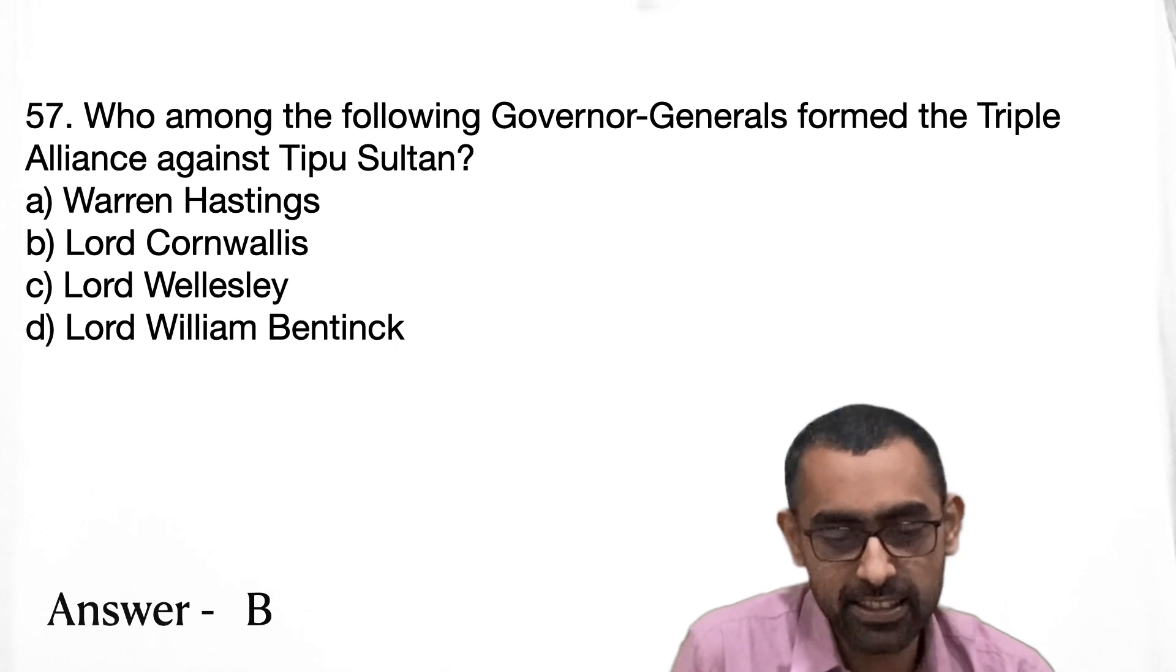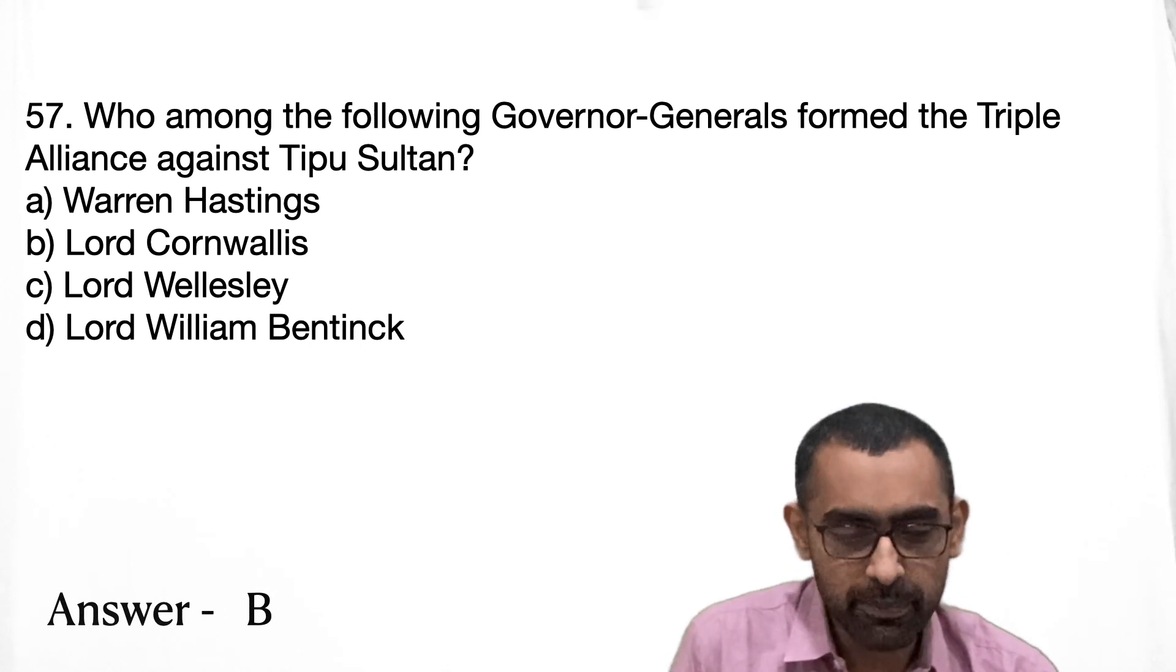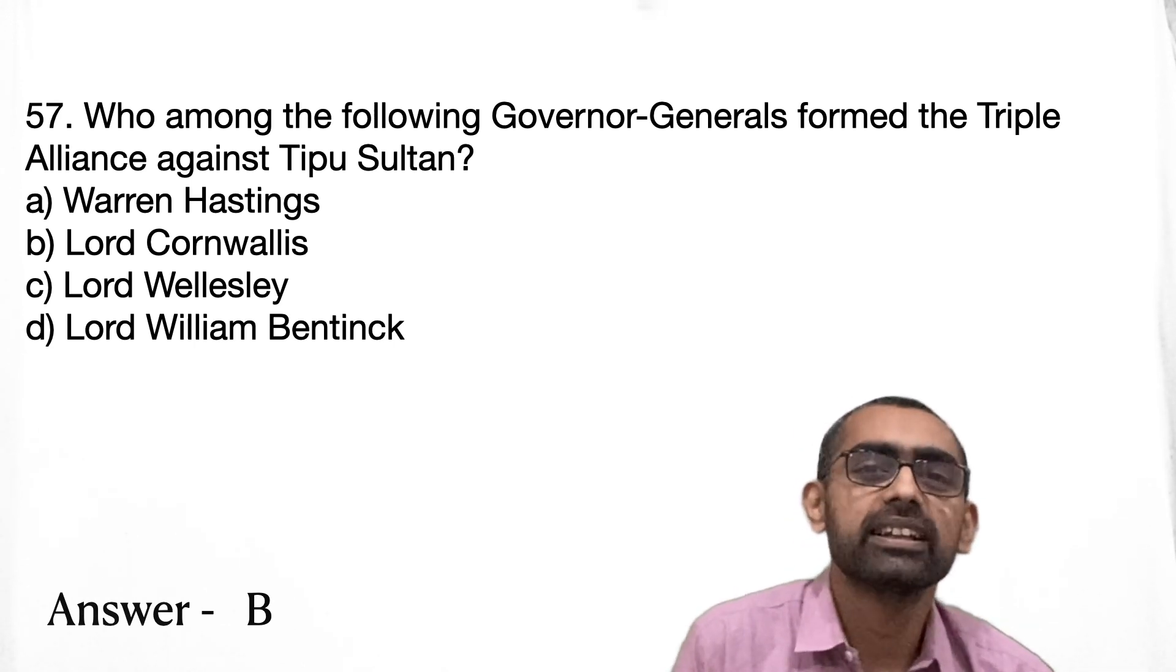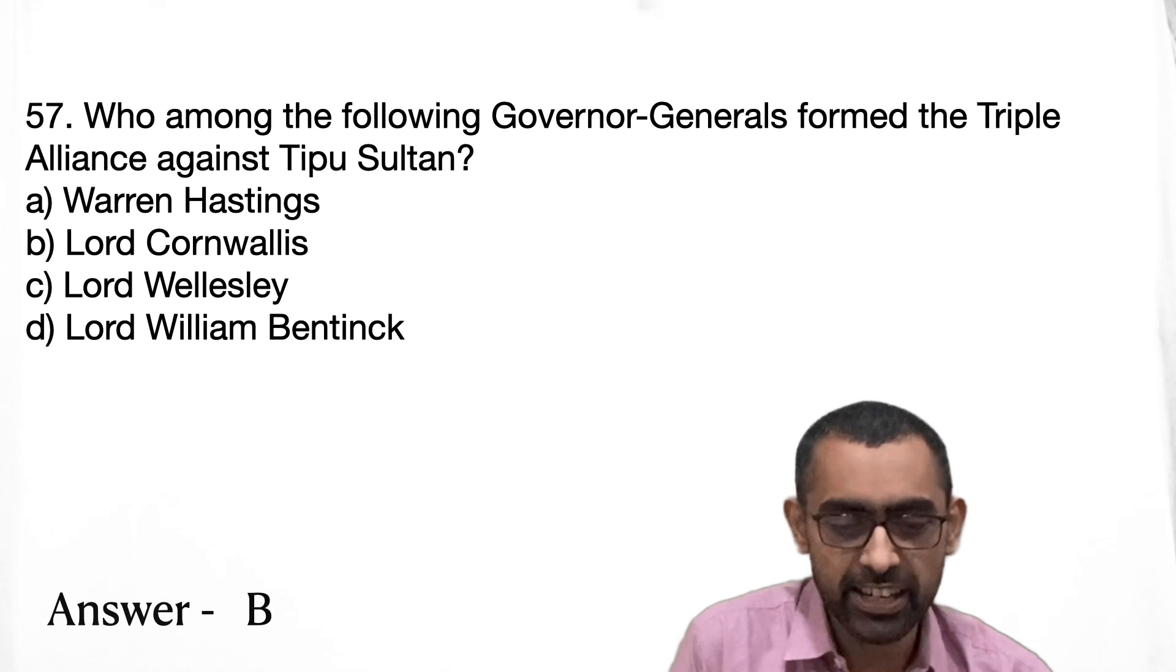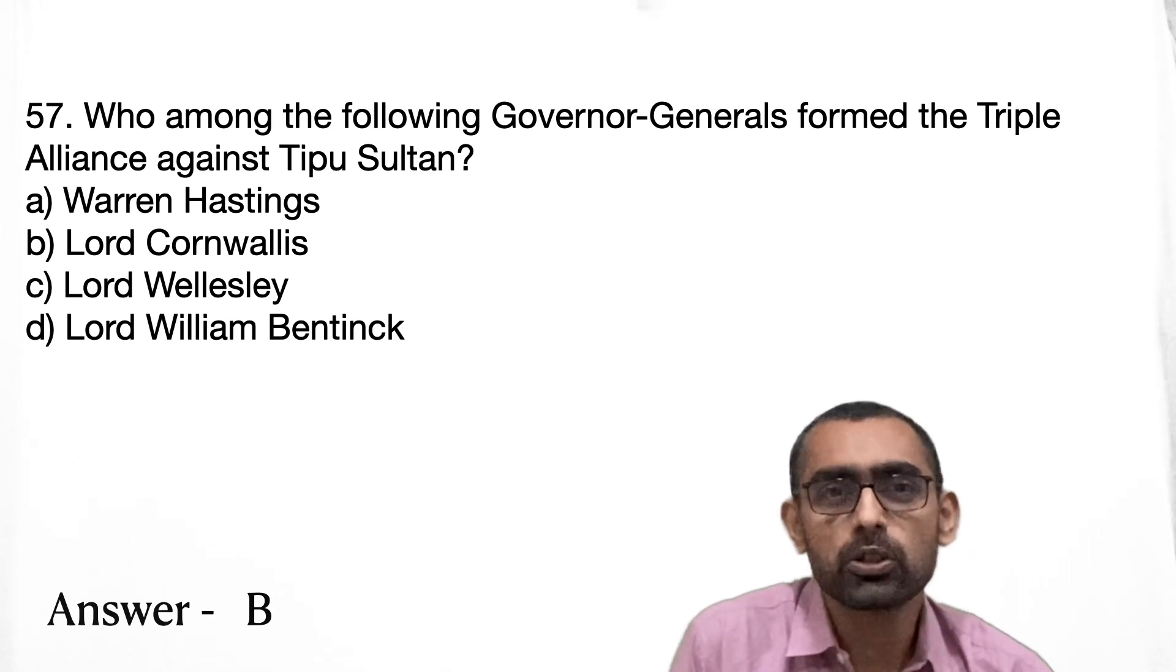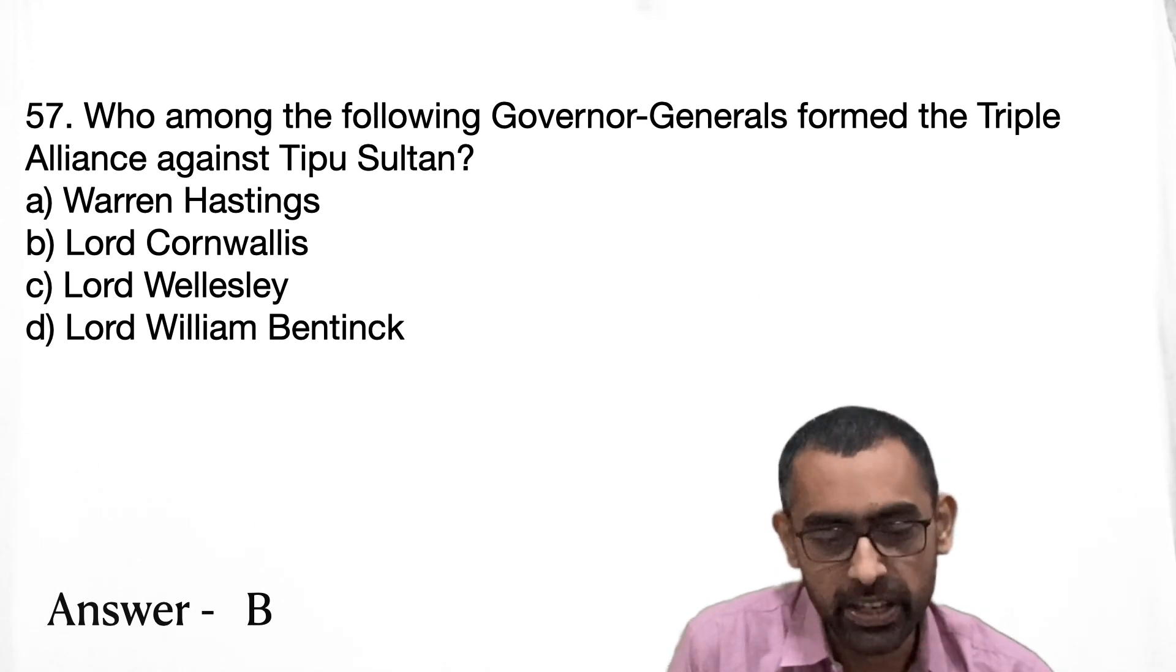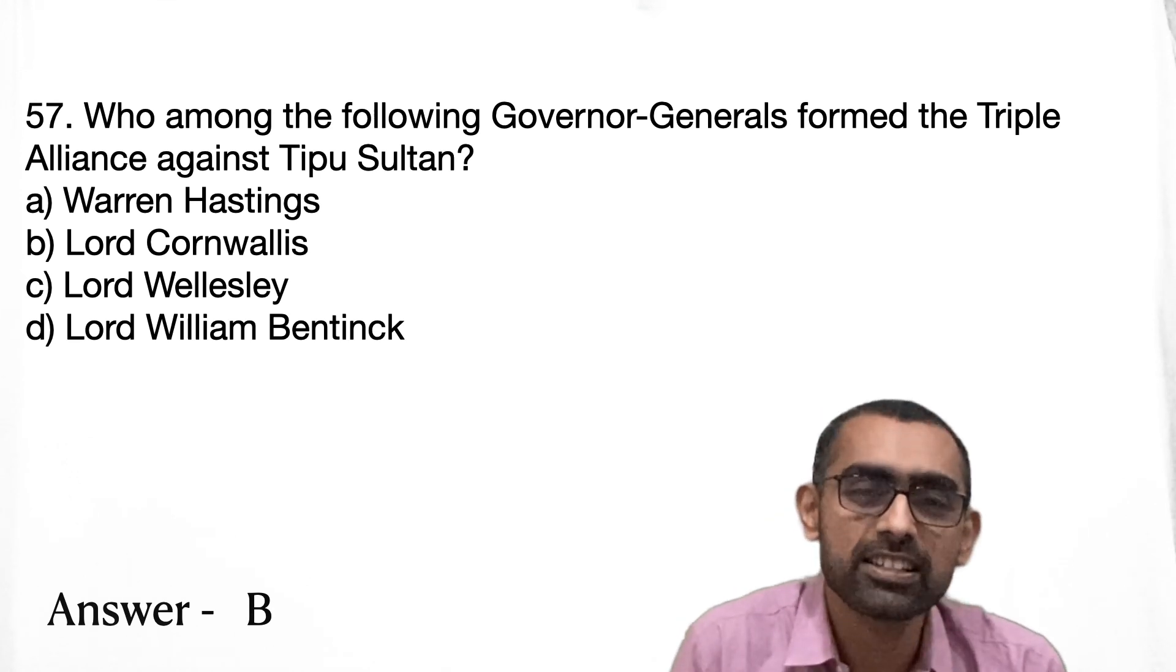Moving on to the next question. Now again, 57 is a very direct question from history. And one thing I want to suggest here, the answer will be B, Lord Cornwallis, who basically formed the triple alliance against Tipu Sultan. So here the point to be noted is that Governor Generals and their time period, these are important. And what peculiar things happened during their tenure is very, very important because this is generally a direct question. These kind of questions are fairly common. So please read what happened during Warren Hastings, what happened during William Bentinck and so on and so forth. So here the answer will be B, but you need to know the significant developments during the period of all the Governor Generals.